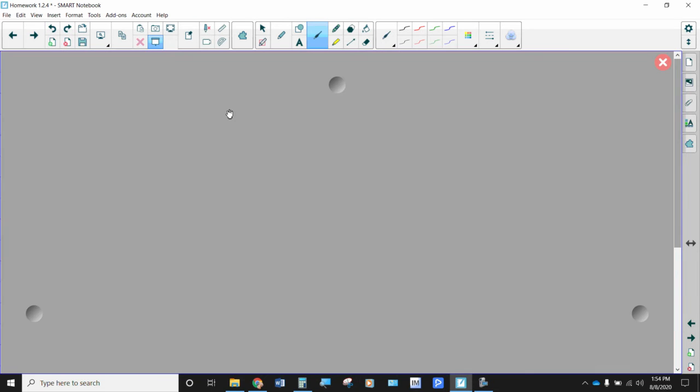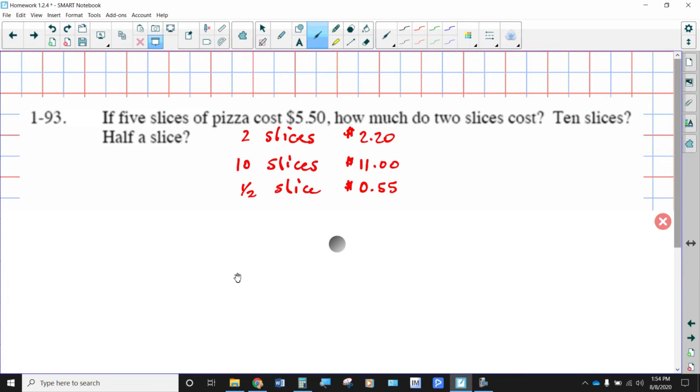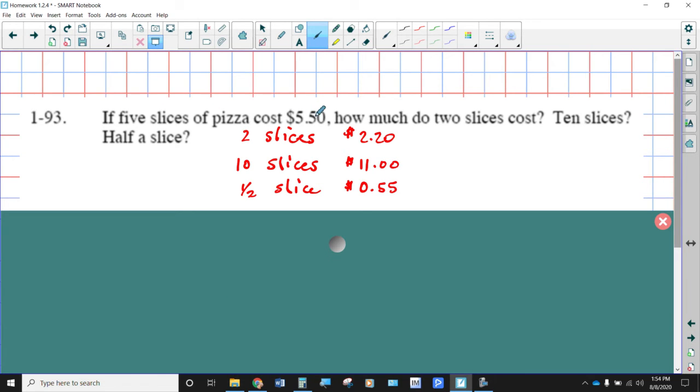If 5 slices of pizza cost $5.50, how much do 2 slices cost, 10 slices, and half of a slice? This is a situation where it might be good to find the unit rate. 5 slices for $5.50. How much would it be for one slice? You would do the division. 5 divided by 5 gives you 1. So $5.50 divided by 5 will tell you the price for each slice, which ends up being $1.10 after you do the division. If that's the unit rate, then you can use that. Multiply it times 2 for $2.20. Multiply it times 10 for $11. And then take half of this for $0.55.